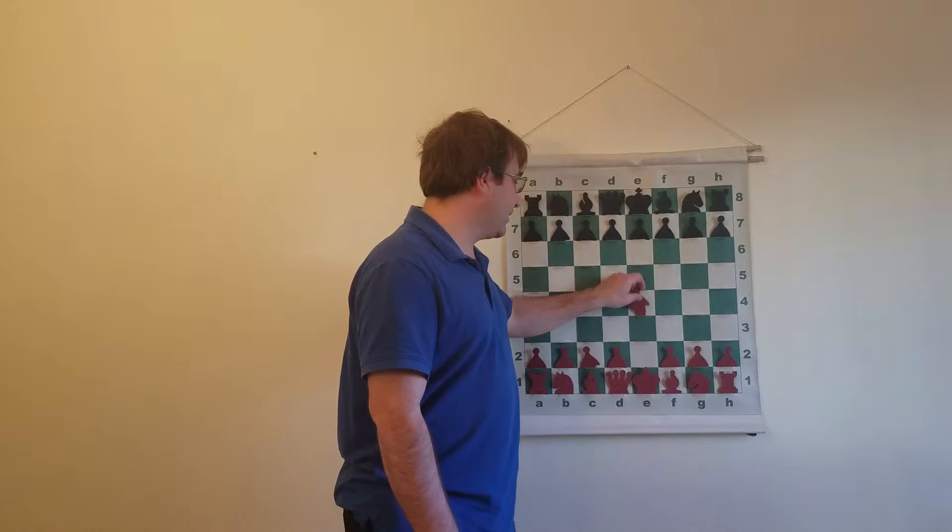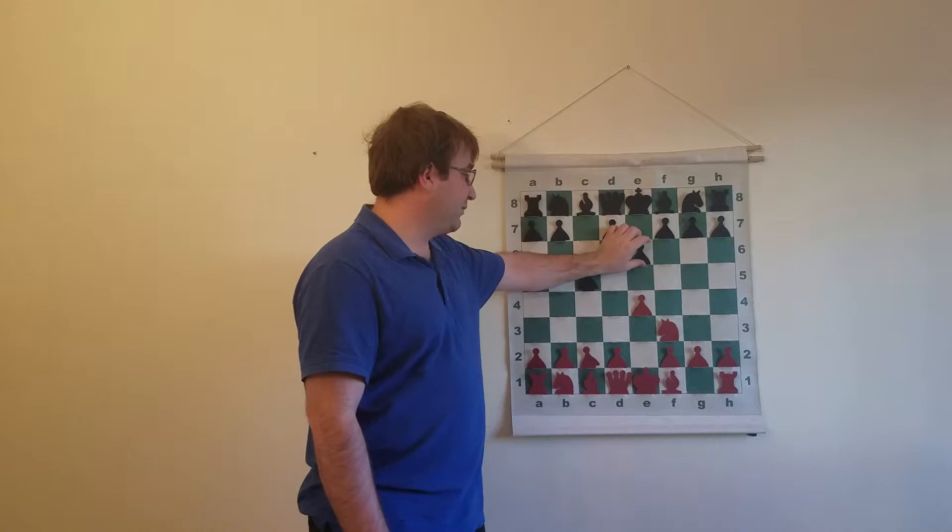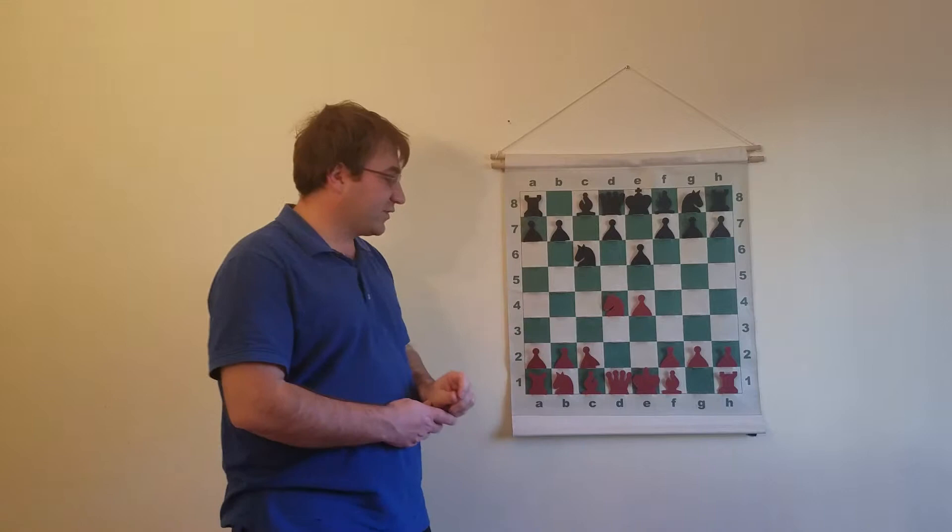And this specifically comes out of the move order within the Taimanov variation. It begins after e4, c5, knight f3, e6. This is a pretty common move order. d4, c takes d4, knight takes d4, knight c6.